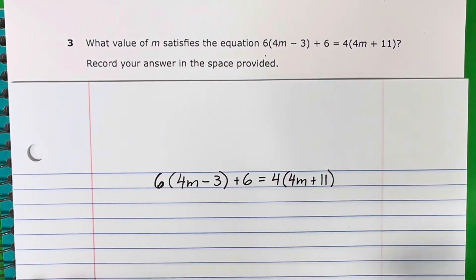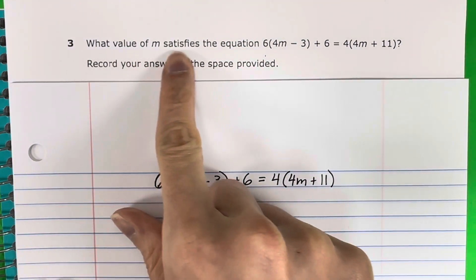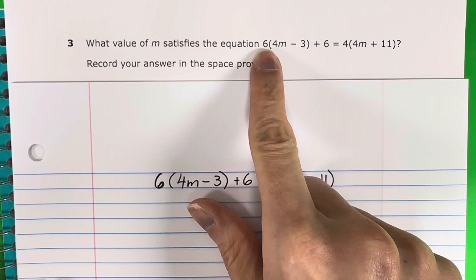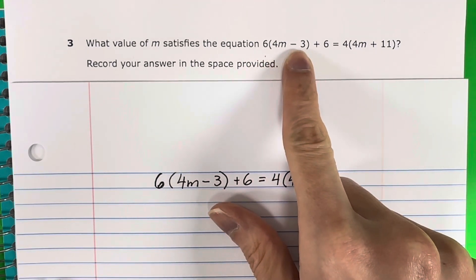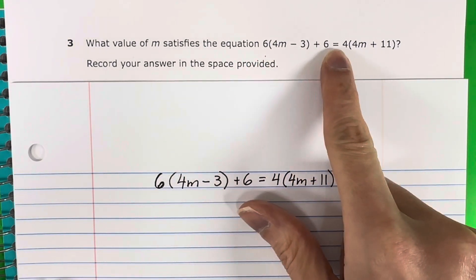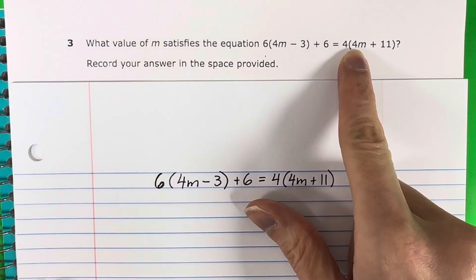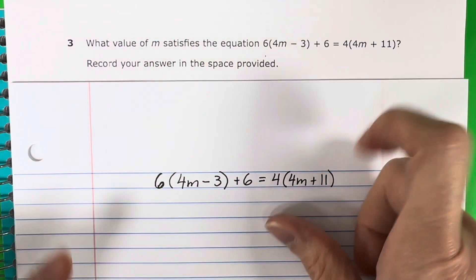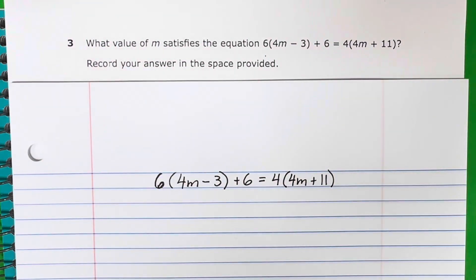Question 3. What value of m satisfies the equation 6 times (4m minus 3) plus 6 equals 4 times (4m plus 11)? Record your answer in the space provided.